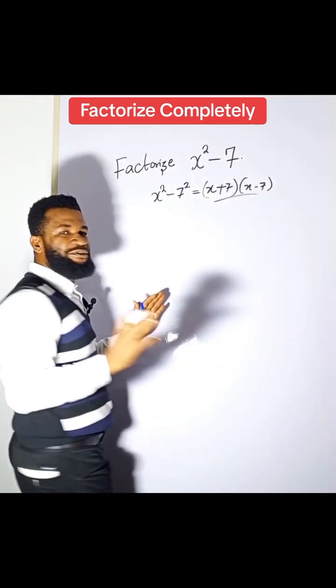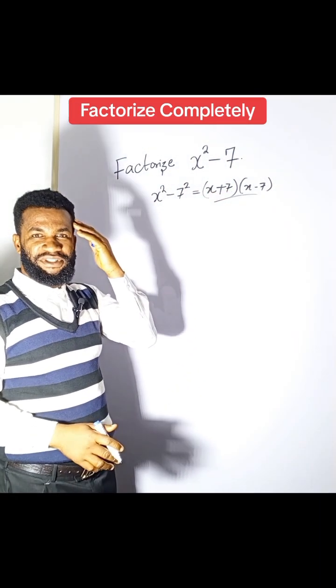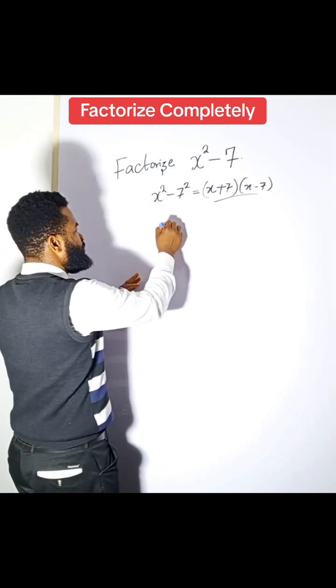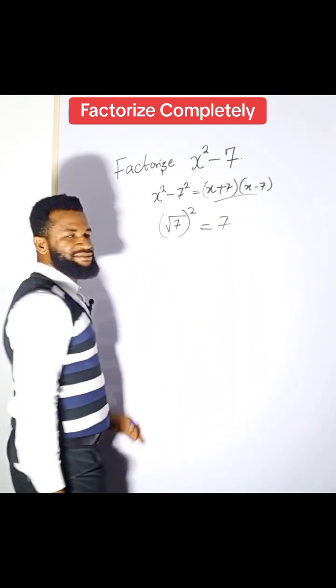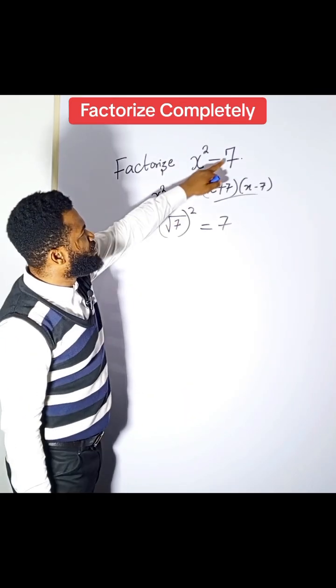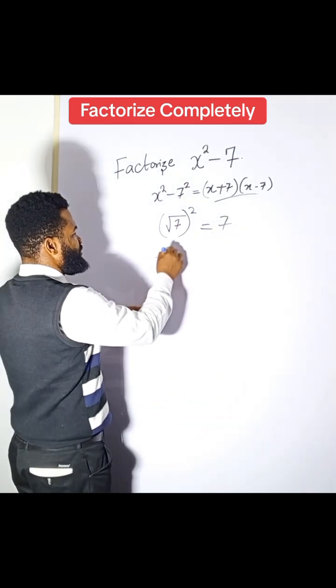However, you can still do this the same way. Remember if you have √7 squared, it equals 7. So I'm going to remove this 7 and replace it with √7 squared, giving us x² minus (√7)².